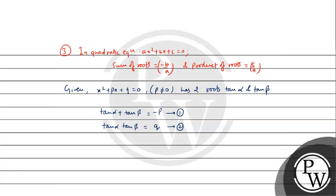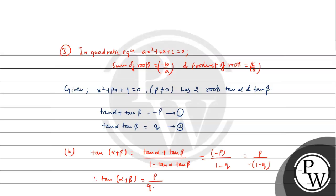Now let us check the options and first find tan(alpha+beta). Using the formula, tan(alpha+beta) equals tan alpha plus tan beta upon 1 minus tan alpha·tan beta. Substituting: numerator is minus p, denominator is 1 minus q. This gives minus p upon 1 minus q, which simplifies to p upon q minus 1. This is exactly what option B states, so option B is correct.